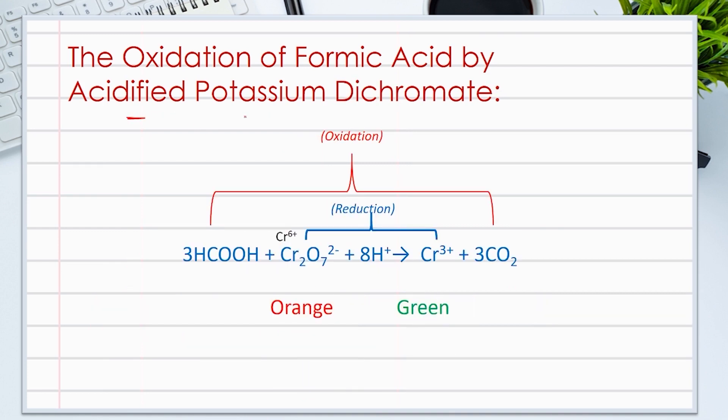Acidified potassium dichromate can also be used, like we said, to detect for the presence of formic acid. 3 moles of formic acid HCOOH react with 1 mole of the orange in color potassium dichromate K2Cr2O7. We only show the dichromate ion Cr2O7 2-.